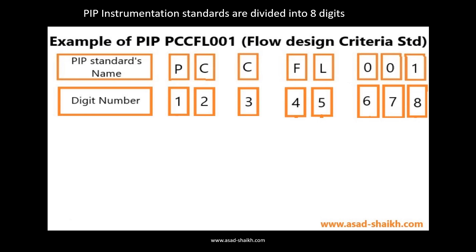For example, you might have magnetic flow meters or orifice flow meters, and this standard helps determine which technology is compatible with your needs. It has eight digits, starting with PC-CFL-001. Let's understand each digit in depth.